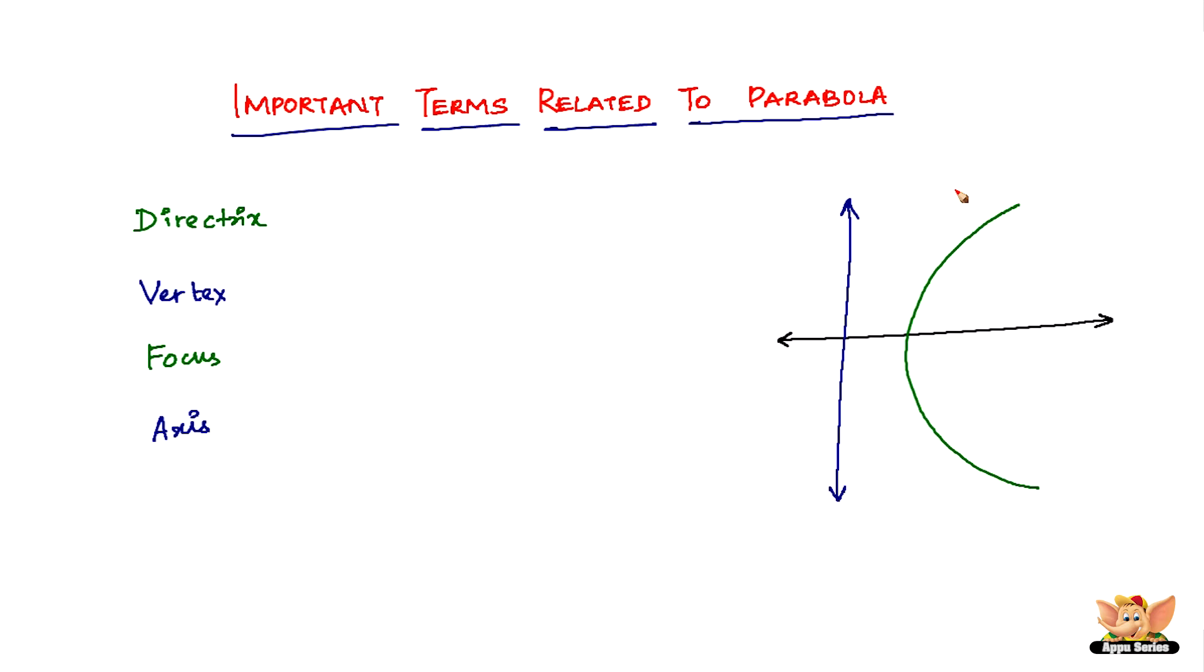Now there are three lines here. If you can see, one is a black horizontal line, one is a blue vertical line, and one is green, which is not a straight line. Now this green line is exactly what is called a parabola. All right, now what is the black line called? The black line is called the axis. What is the blue line called? The blue line is called the directrix.